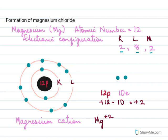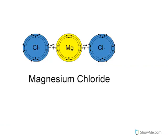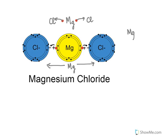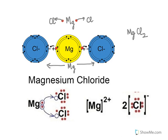This is the formation of magnesium chloride, MgCl₂. Magnesium has two valence electrons to give out, and chlorine needs only one electron. So magnesium can satisfy two chlorine atoms — it gives one electron to one chlorine and the other electron to the other chlorine. Magnesium transfers one electron to one chlorine and the other electron to the other chlorine, hence we get MgCl₂.